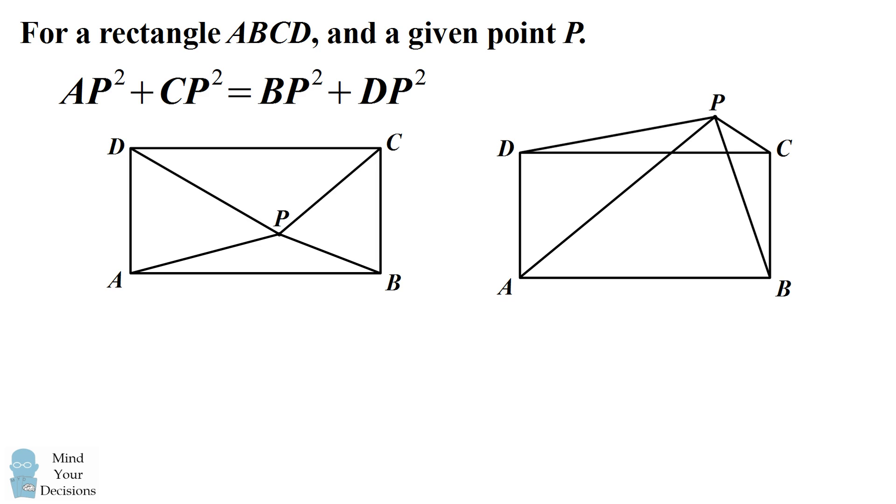In other words, the sum of the squared distances from P to a set of opposite corners of the rectangle is equal to the same sum of the squared distances of P to the other set of opposite corners in the rectangle.